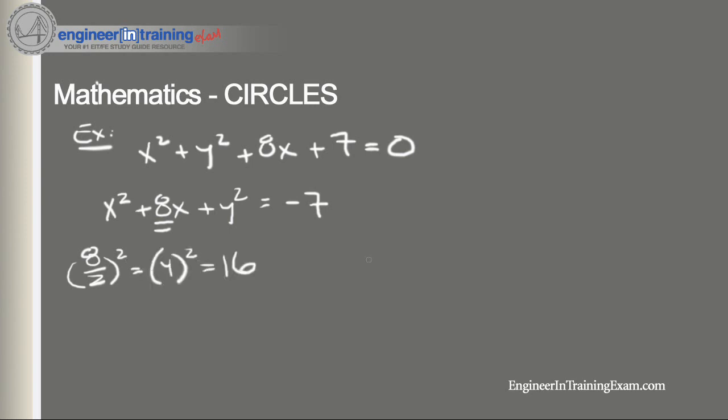So now what we do is add that, we add this term to both sides of the equation. So we get x squared plus 8x plus 16 plus y squared is equal to negative 7 plus 16.